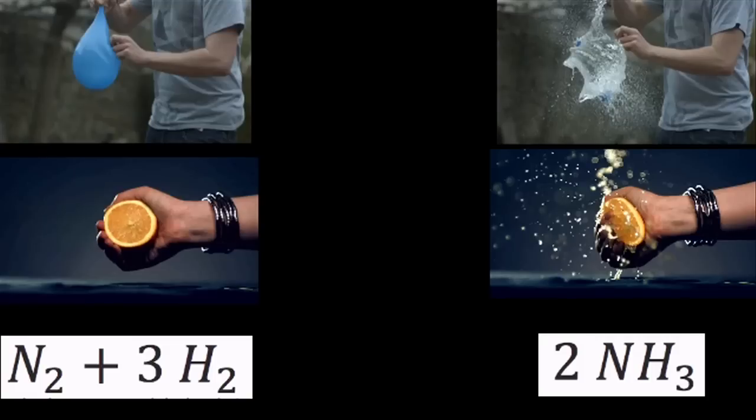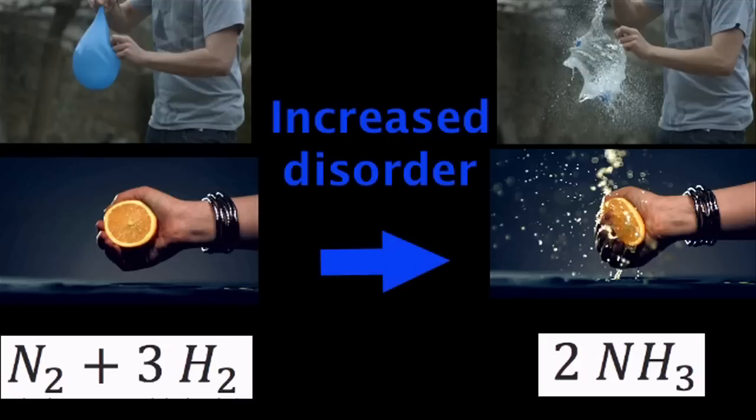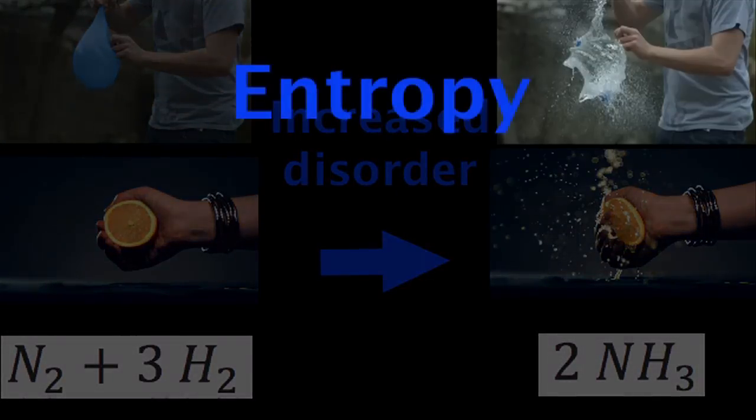The reactions resulted in increased disorder, and in physics we use the notion of entropy to represent the fact that things tend to get more disordered over time. To put it simply, entropy is a measure of disorder.